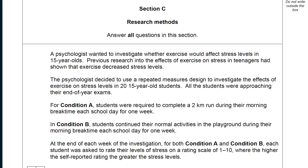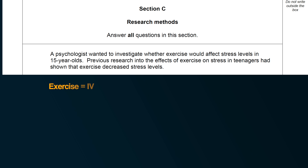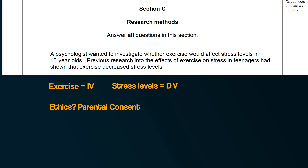Here's an example. The scenario says: 'A psychologist wanted to investigate whether exercise would affect stress levels in 15 year olds.' Did you notice that exercise is your independent variable and stress levels are your dependent variable? But we're not told yet specifically how they measured stress, nor what the conditions of the IV are — we'll need to look for that later. And note that they are under 16, so there are potentially going to be ethical issues relating to parental consent.